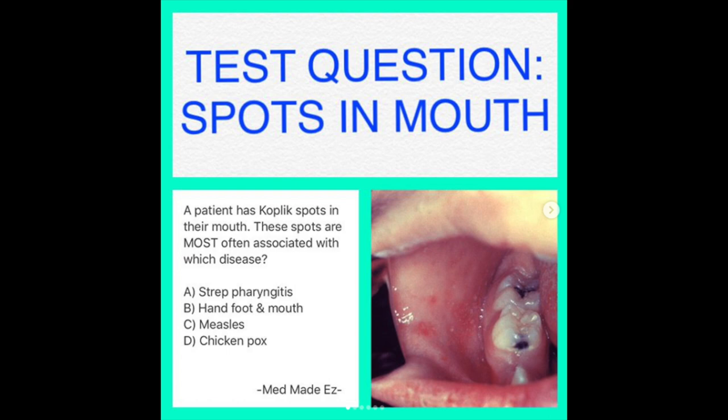A patient has complex spots in their mouth. These spots are most often associated with which disease? A, strep pharyngitis; B, hand foot and mouth; C, measles; or D, chicken pox. What's your answer?